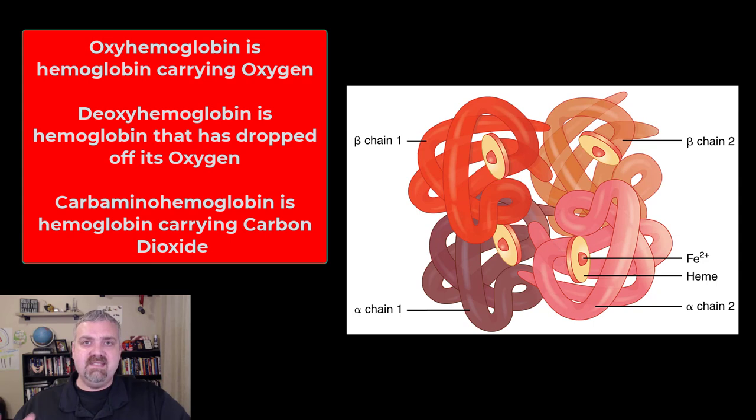Most of your hemoglobin becomes deoxyhemoglobin as it drops off its oxygen payload. But about 23% of the carbon dioxide produced in your tissues is carried back to your lungs on hemoglobin. Hemoglobin that has picked up carbon dioxide is called carbaminohemoglobin.